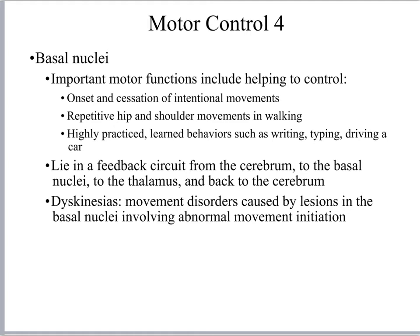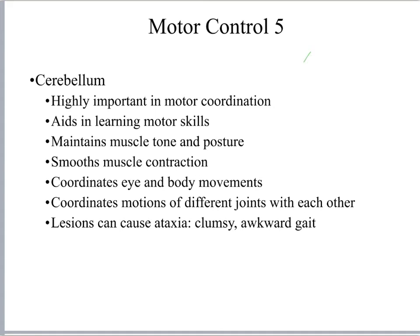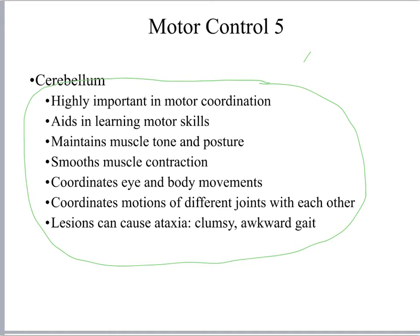The basal nuclei are gray matter, and this gray matter is going to be important for modulating intentional movements. It helps with repetitive movements, it helps smooth out movements, and it helps you not think about them — which is really important for practiced learned behaviors. You get a really nice feedback circuit between the cerebrum, the basal nuclei, the thalamus, and then back to the cerebrum. The cerebellum is going to be very integrated with what the cerebrum's motor areas are doing, in order to help with motor coordination, posture, tone, and motor skills.